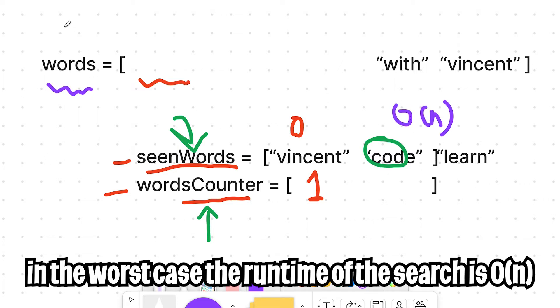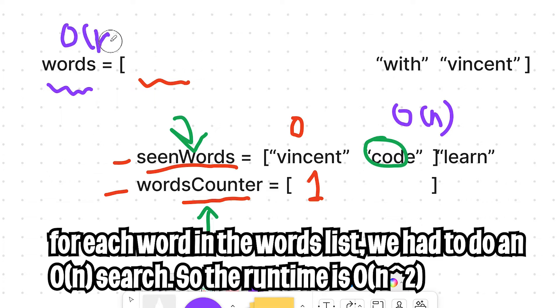And the major problem with the solution is that I would always have to search through the seen words to find the word so I could find the index to update the words counter. As you can imagine, each search takes O of n time. And we had to do this for each word. So we're basically doing a for loop, which is O of n time. So basically, the runtime of this algorithm is O of n squared, which is pretty slow.